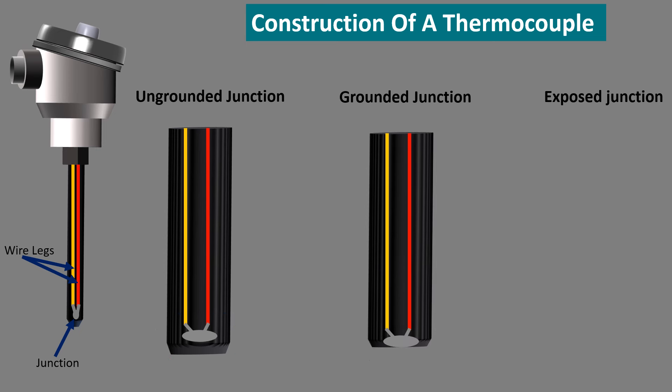Grounded junction. In this type of junction, the metal wires as well as the protection cover are connected together. This type is used to measure the temperature in acidic atmospheres.